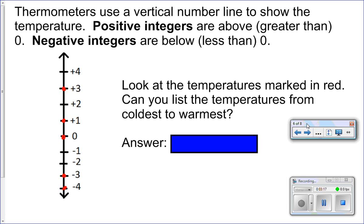Thermometers use a vertical number line to show the temperature. Positive integers are above, or greater than, 0. Negative integers are below, less than 0.